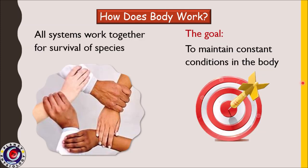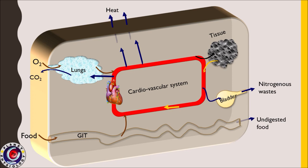All these systems work together, and the ultimate goal of their working is to maintain constant conditions in the body, which will help in survival of the species. This picture represents our body connected to the exterior via various openings. The end-to-end tunnel represents our digestive system, which digests food and absorbs nutrients into the blood. Our cells also need oxygen to utilize these nutrients to produce energy.